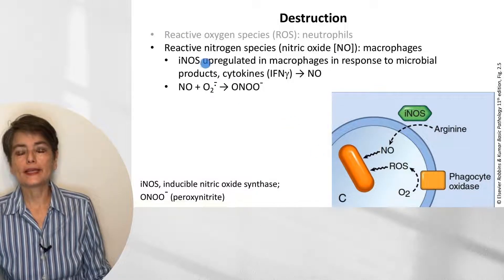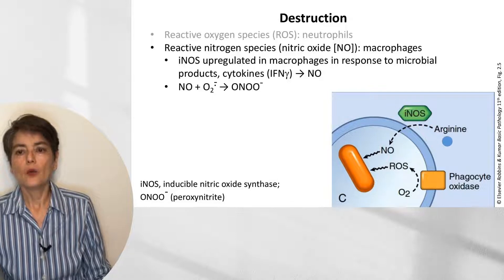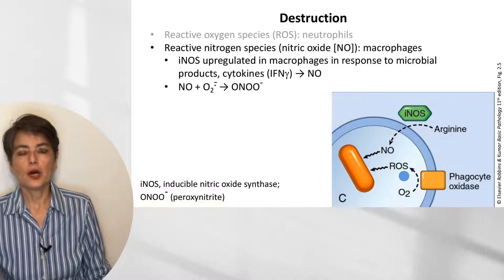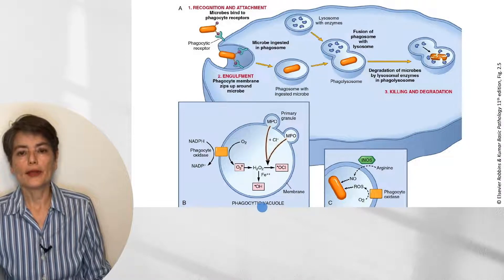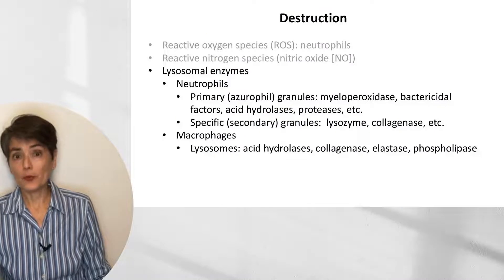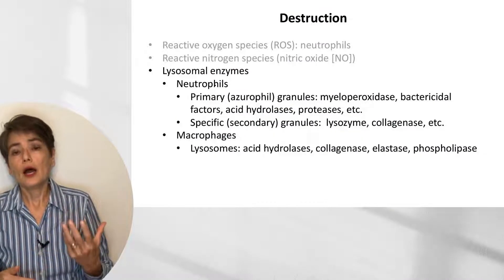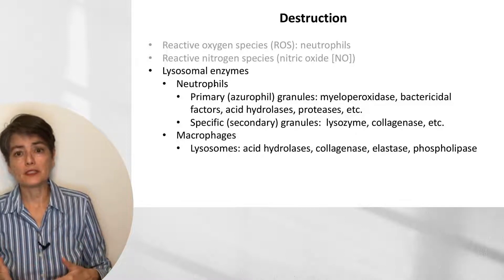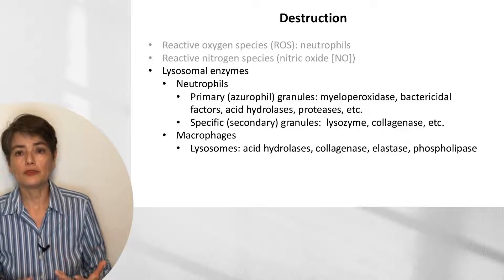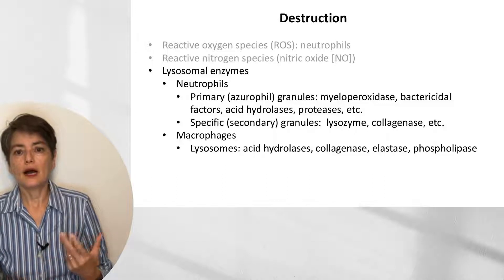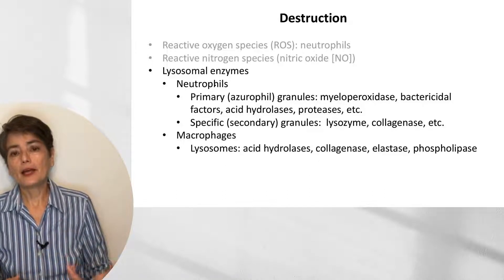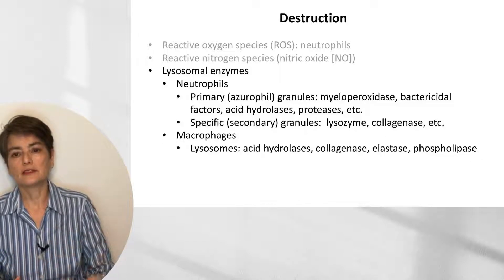In macrophages, reactive nitrogen species are used — specifically nitric oxide. Inducible nitric oxide synthase converts arginine to nitric oxide, which combines with superoxide from phagocyte oxidase to yield peroxynitrite, which is very effective at destroying pathogens. Additionally, neutrophils have two types of granules: primary (azurophilic, containing myeloperoxidase) and specific granules (containing lysozymes, collagenases, etc.). Macrophages also have a variety of lysosomal enzymes including acid hydrolases and collagenases.